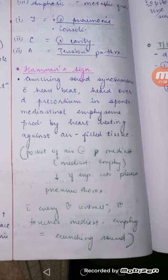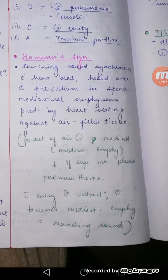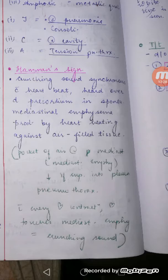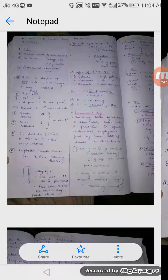In tension pneumothorax there is also Hamman's sign — a crunching sound that occurs with every heartbeat. Your stethoscope is placed over the precordium (not directly over the heart). With every heartbeat you hear a crunching sound. The reason is spontaneous mediastinal emphysema: every time the heart contracts, there is friction between the contracting heart and the air-filled mediastinal tissue, producing that crunching sound at the level of the precordium.